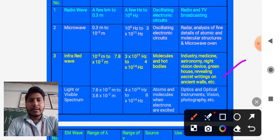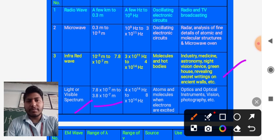The fourth ray is light or visible ray. The range of wavelength of this region is 7.8 times 10 to the power -7 meter to 3.8 times 10 to the power -7 meter. The range of frequency is 4 times 10 to the power 14 to 8 times 10 to the power 14 hertz. The source is atoms and molecules when electrons are excited.